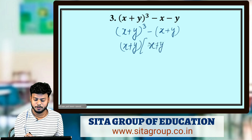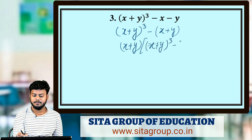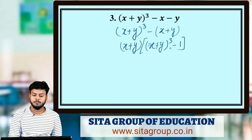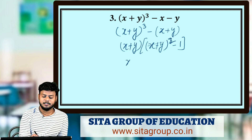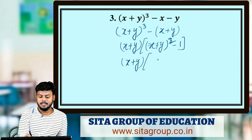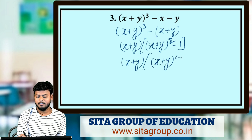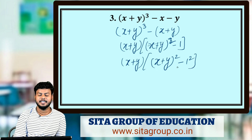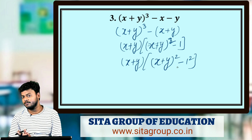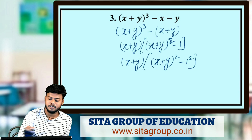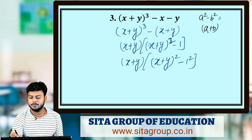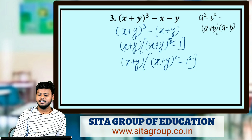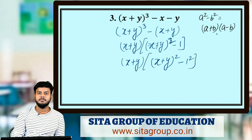After taking (x + y) common, we get (x + y)[(x + y)² - 1]. Now 1 can be written as 1². So inside the bracket it looks like a² - b², where a = (x + y) and b = 1. We know that a² - b² = (a + b)(a - b). Apply this identity.